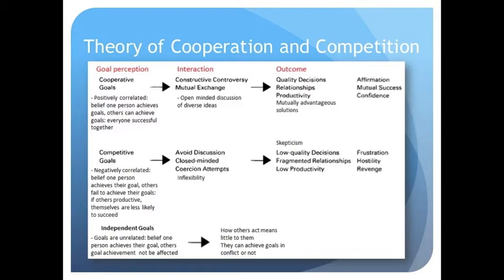The main theory of focus today is the theory of cooperation and competition. This theory states that the way goals are perceived determines how people interact with each other and the resulting outcome. Cooperation occurs when people believe their goals are positively correlated, so that as one person achieves their goals, others also achieve their goals. They understand that others' goal attainment helps them and that they can be successful together. This leads to constructive controversy, which is the open-minded discussion of diverse ideas, and results in mutually advantageous quality solutions. This positive experience also gives confidence to group members that they can handle conflicts effectively.